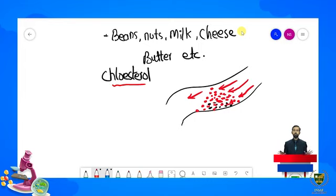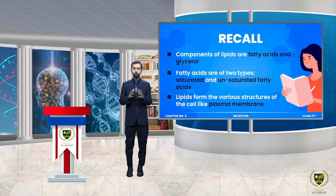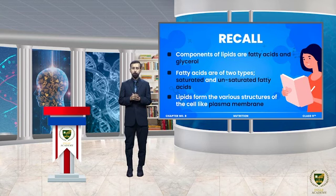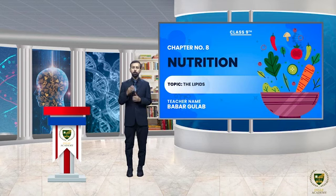Yeh tha students hamare lecture jismein hamne lipids ko explain kiya. Aaj ke lecture mein hamne lipids ki types, lipid ka structure, lipids ke functions explain kiye. Further hamne dekha ki jo lipids hain wo cell level par koon se structures banane mein involved hote hain. Finally hamne dekha ki lipids kin food sources se obtain kiye ja sakte hain. I hope now you have a clear idea about the lipids. Milte hain next lecture mein — Allah Hafiz.